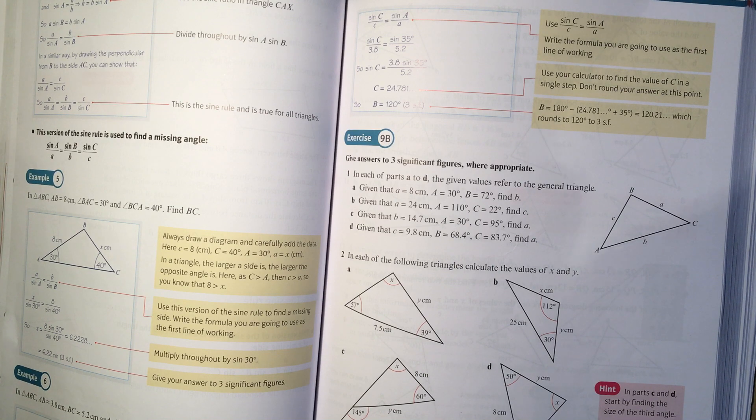You need to use a bit of judgment but we've got SOHCAHTOA, Pythagoras theorem - they work on right angle triangles. We've got sine rule and cosine rule, they work on any triangle. So if you've got a trigonometry problem try each of those things.